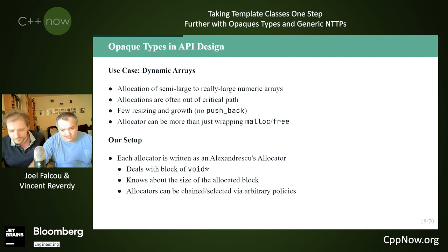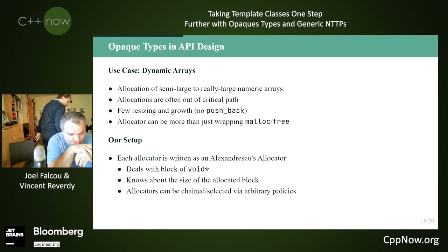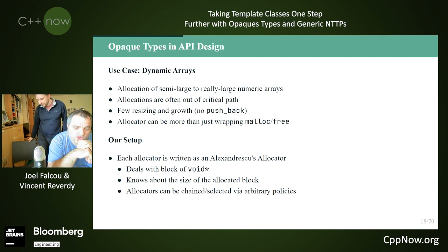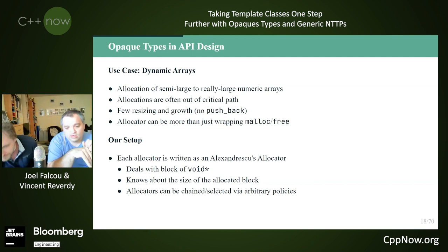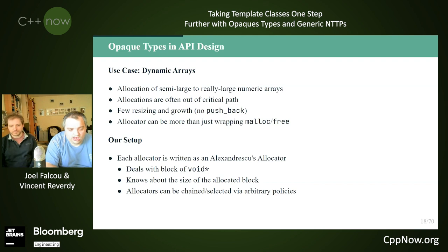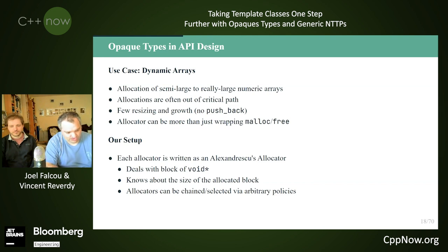If you want a very generic way to generate opaque types, you can look at Louis Dionne's dyno library, which takes that to another level. For opaque type allocators, we have a very specific use case: we are dealing with dynamic arrays that are rather large and full of numeric values. Allocations are often outside the critical path, with few resizings and arbitrary growth — we don't push back values into a four-dimensional array.